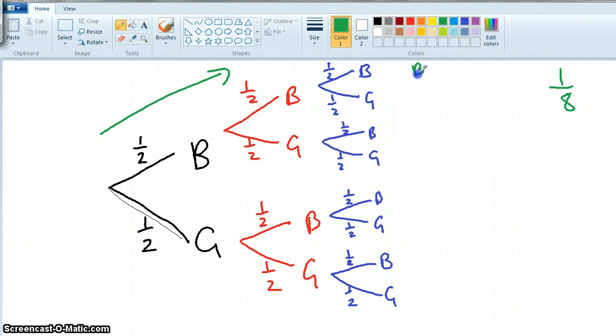So this first one, we've got boy, boy, boy, which has got an eighth probability. The next one, it's a boy, boy, girl, which has got also the eighth because it's still... And then this one, a boy, girl, boy. A boy, girl, girl.